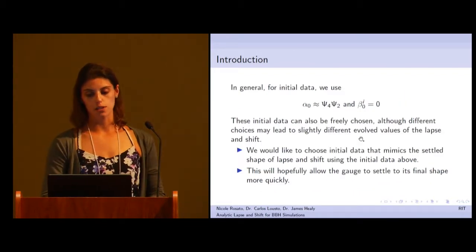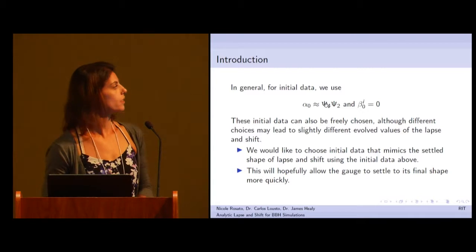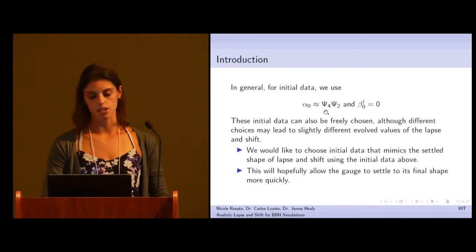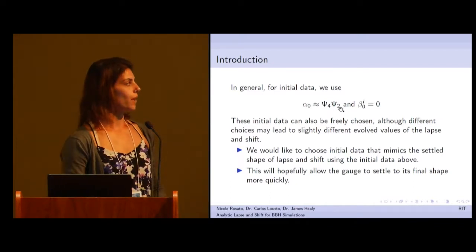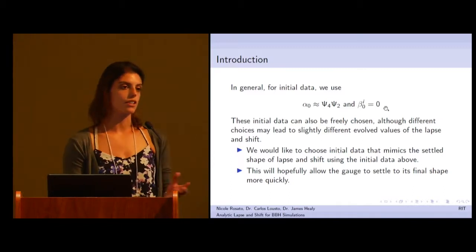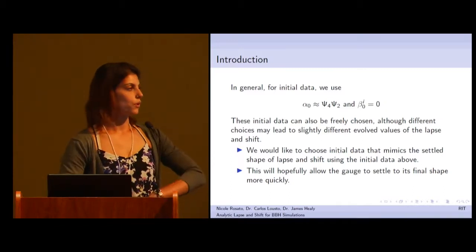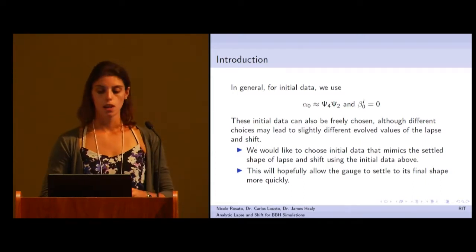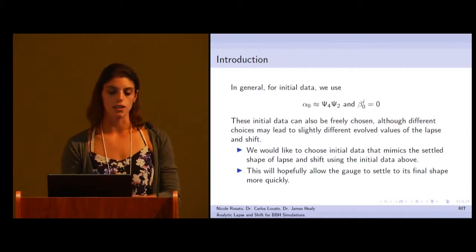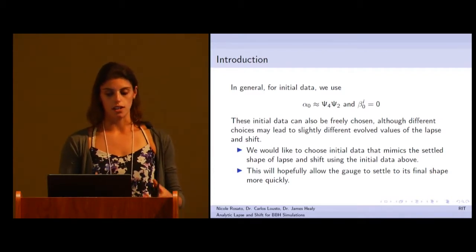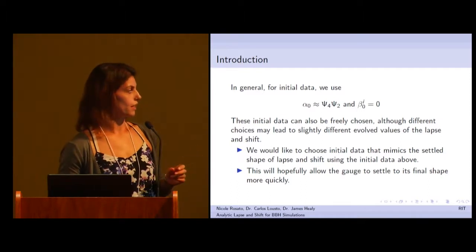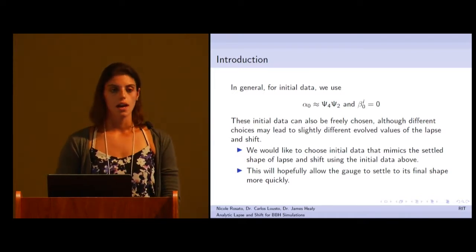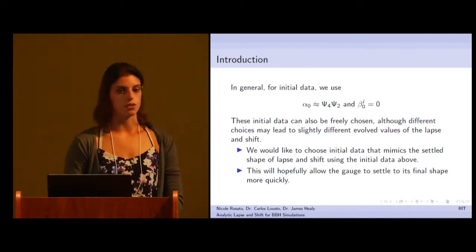In general we choose the lapse to be proportional to the product of two Weyl scalars. psi-4 governs gravitational radiation and psi-2 is the Coulomb field, and beta-0 is just set to 0. These are just convenient choices. So the goal of this project is to find a better choice for these initial values. We want to choose initial data that mimics the settled shape of the lapse and the shift using the initial data. Hopefully this will allow the gauge to settle more quickly to its final shape and reduce error in the simulation and give us better gravitational waveforms.